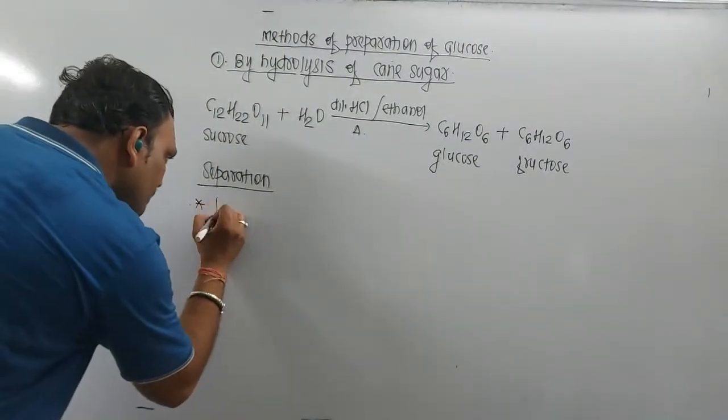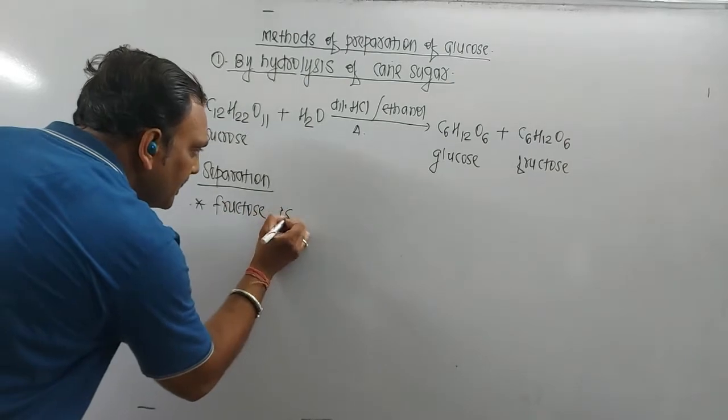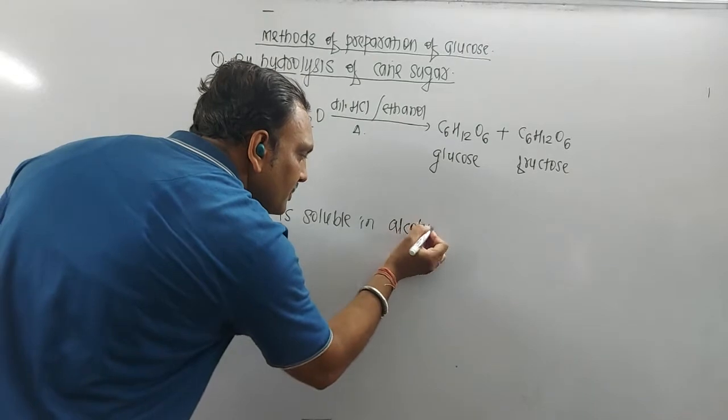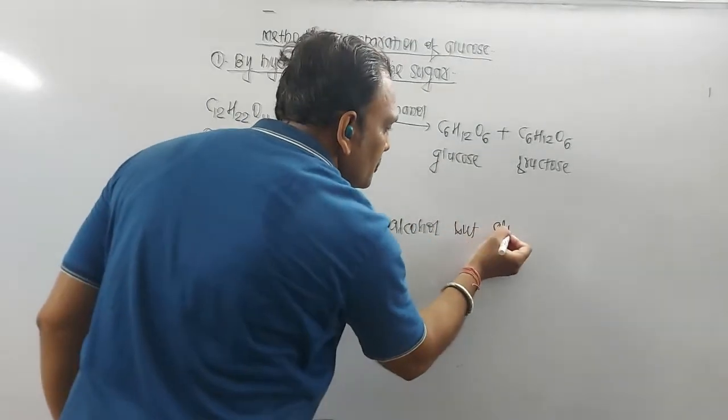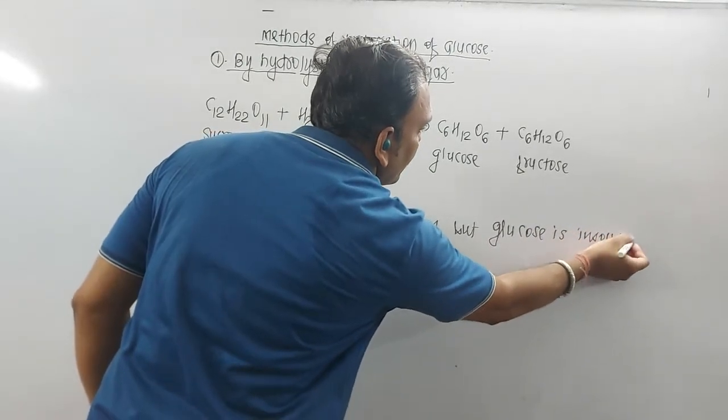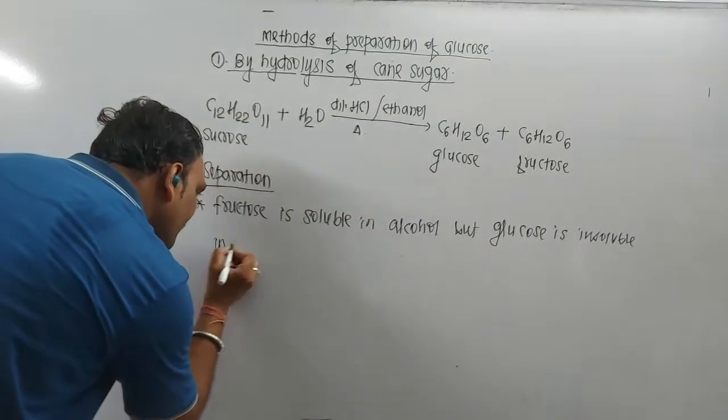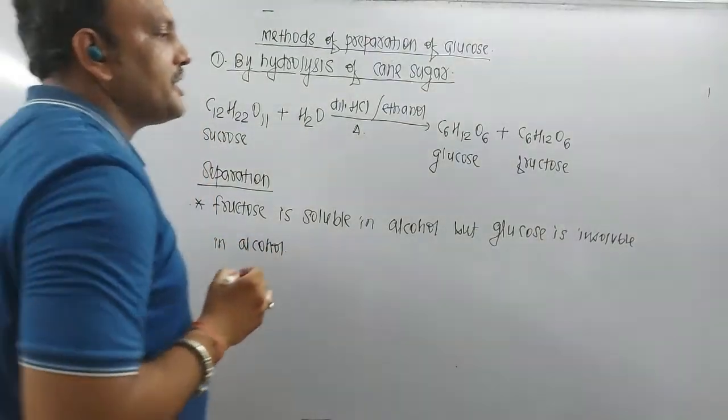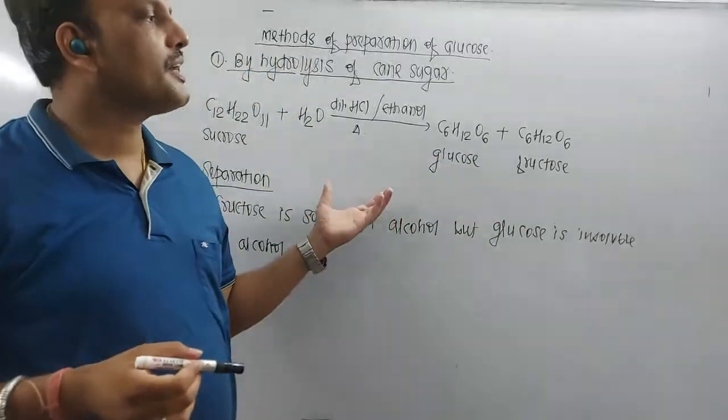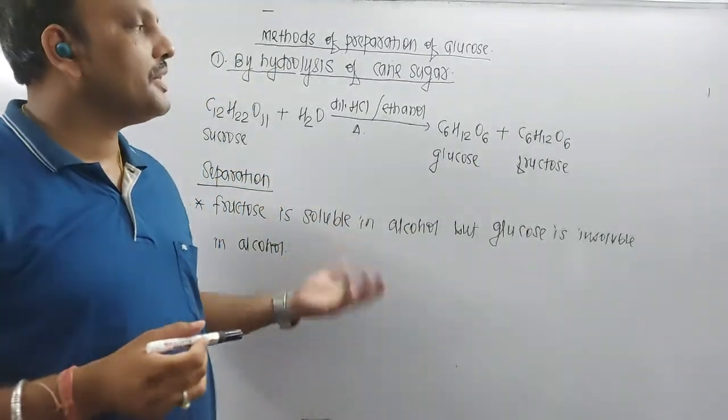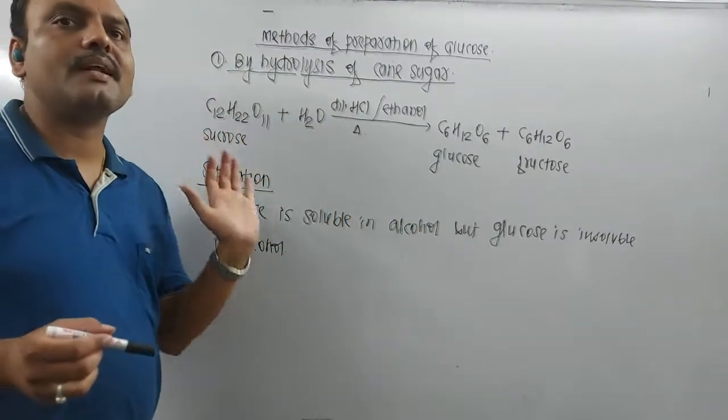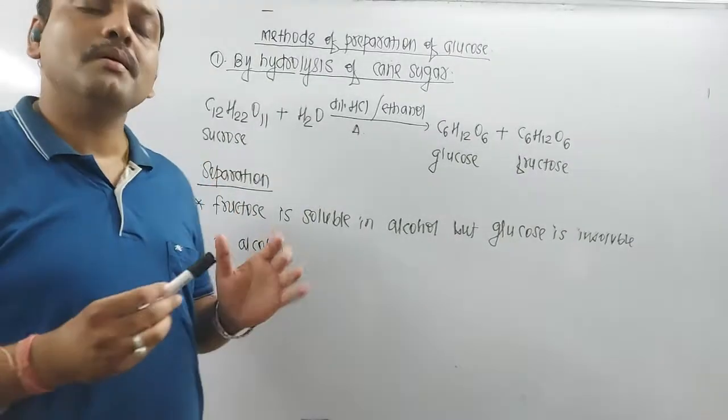Fructose is soluble in alcohol, but glucose is insoluble in alcohol. So ultimately, upon filtration, crystals of glucose separate out and fructose remains in the solution. In this manner, glucose can be separated from fructose.